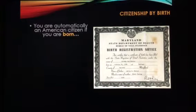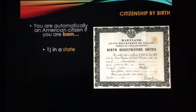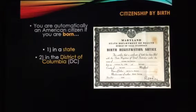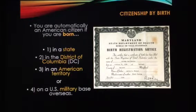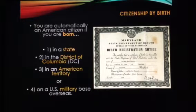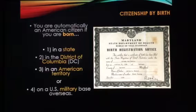You are automatically an American citizen if you are born in one of the 50 states — that's quite clear — or in any jurisdiction of the United States, such as the District of Columbia, that's Washington D.C., in one of our four American territories, or on a U.S. military base overseas under the jurisdiction of the United States. If you are born in one of these locations, you are automatically a U.S. citizen.